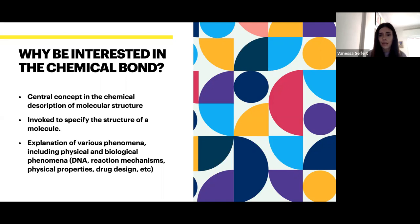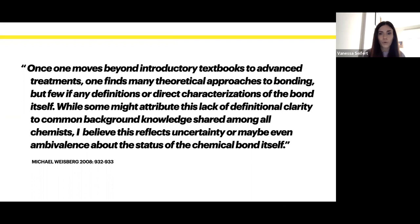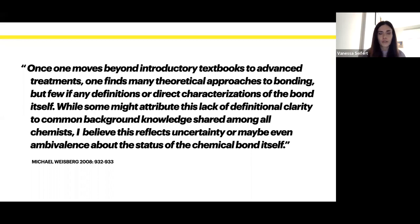You might think that chemistry, being quite an established science, would already have a very concrete understanding of what chemical bonds are. But if you go into the literature, you will find that this is not the case. Mike Weisberg has famously said that once one moves beyond introductory textbooks to more advanced treatments, one finds many theoretical approaches but few, if any, definitions or direct characterizations of the bond itself. While some might attribute this lack of definitional clarity to common background knowledge shared among chemists, he believes this reflects uncertainty or even ambivalence about the status of the chemical bond.